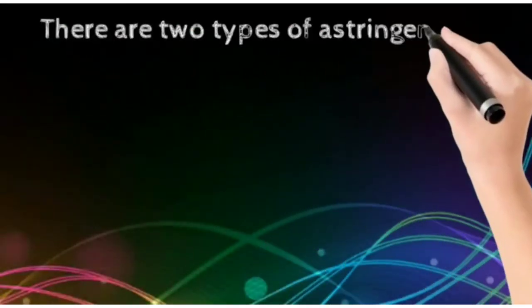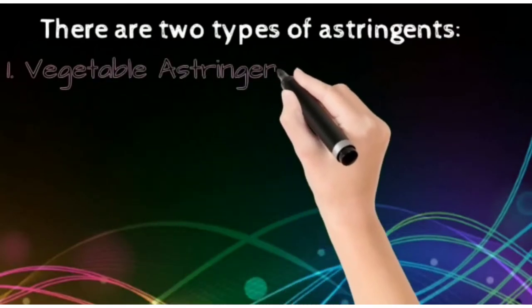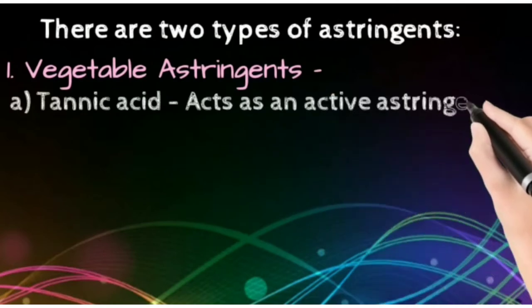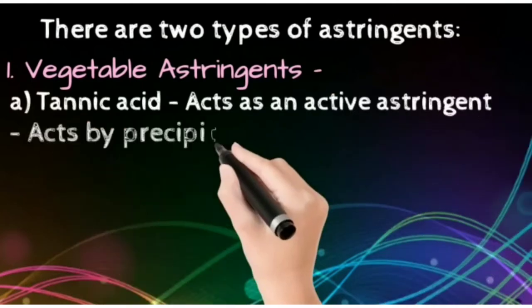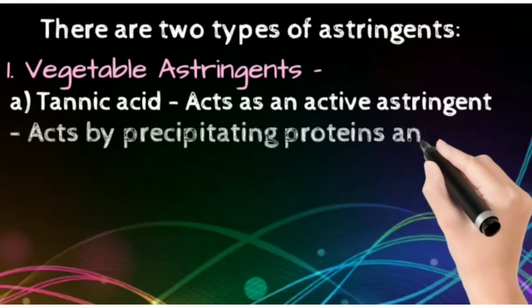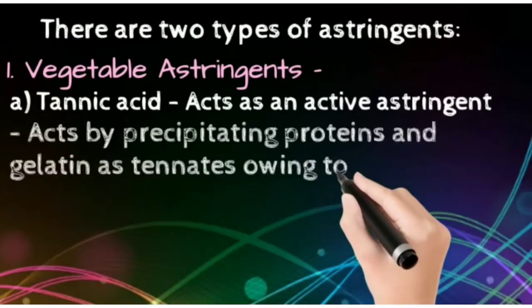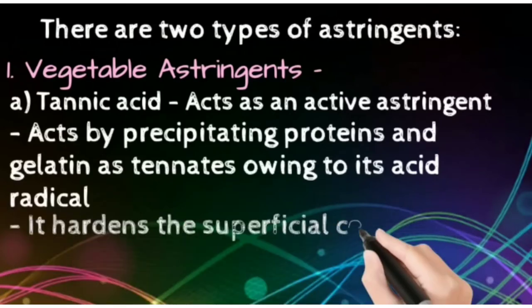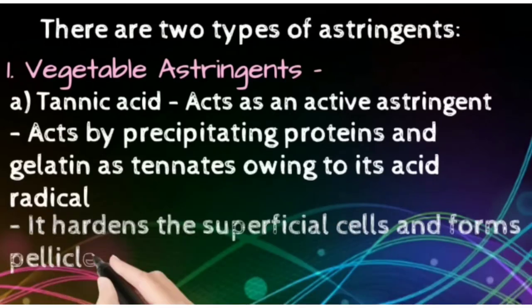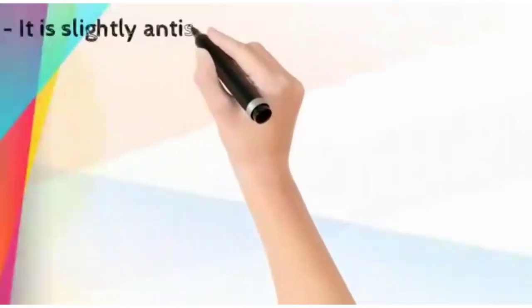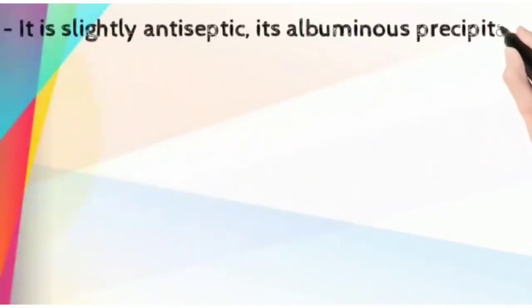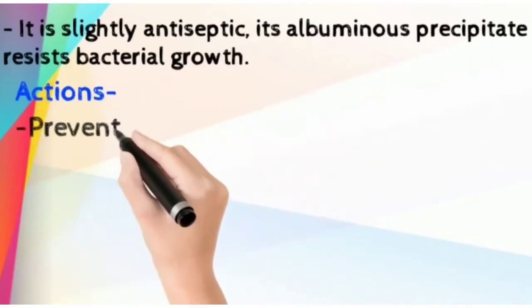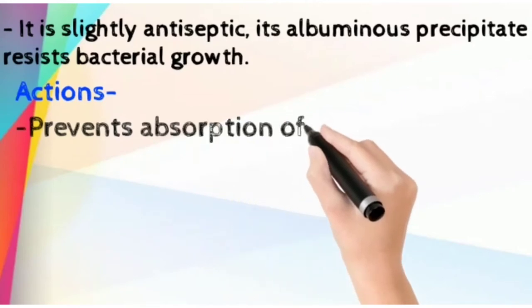Two types of astringents are there. First is vegetable astringents. Under vegetable astringents, the first is tannic acid. It is going to act as an active astringent. It is also going to precipitate the proteins and gelatin as tannates, acting as its own acid radical. Then, it hardens the superficial cells and is going to form a pellicle on them. And it is also slightly antiseptic — its precipitated albumin resists bacterial growth.